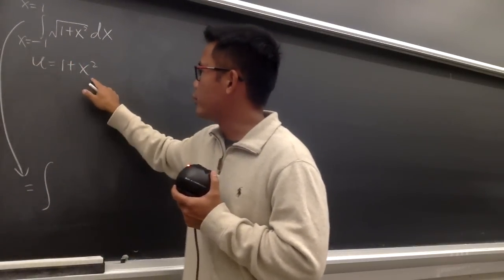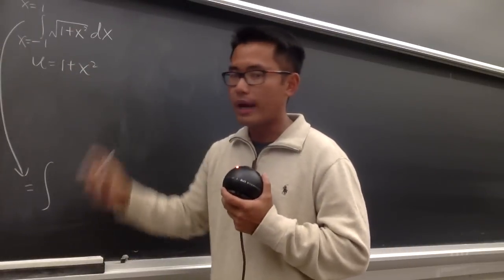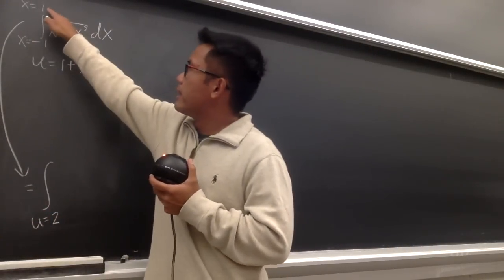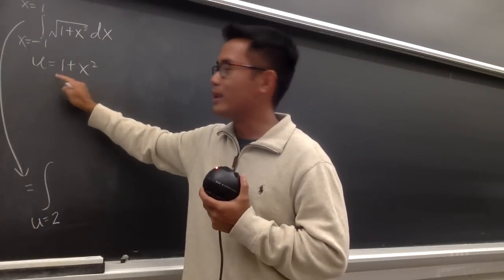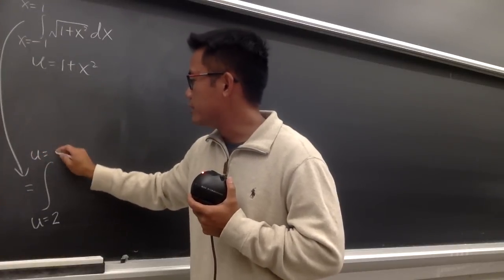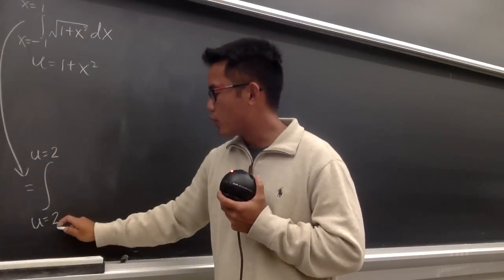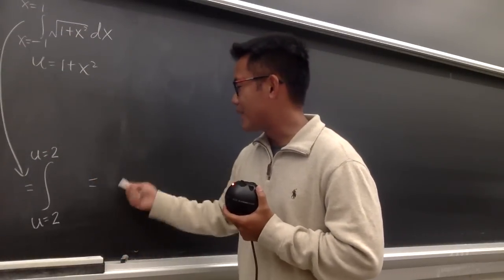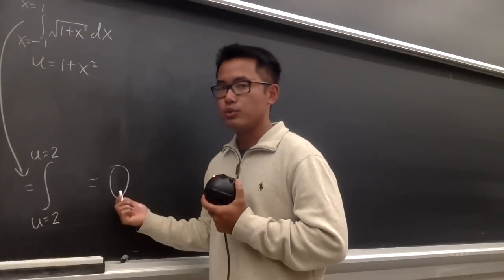When x is equal to negative 1, plug into here: negative 1 squared is 1, plus this 1 is going to be 2. So the new lower limit is u equal to 2. And if you plug in 1 into x, 1 squared is 1, plus this 1 is going to be 2. So the upper limit is also u equal to 2. When you have an integral where these two limits are the same numbers, if you just stop right here, you conclude that this integral is equal to 0.